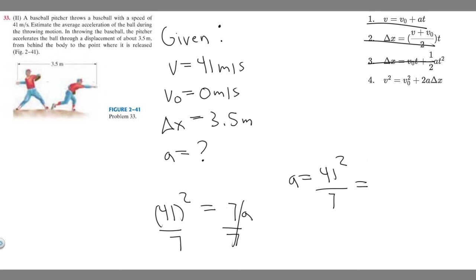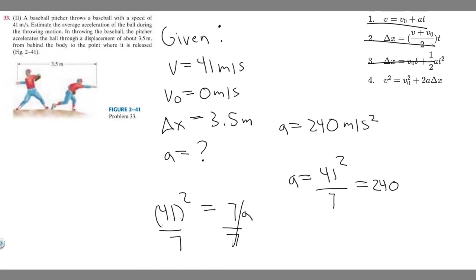Plugging this into the calculator, you should get 240.14. Rounding to three significant figures, that gives us 240. So the acceleration is 240 meters per second squared. The units are meters per second squared because velocity is meters per second, and on the bottom it's squared.